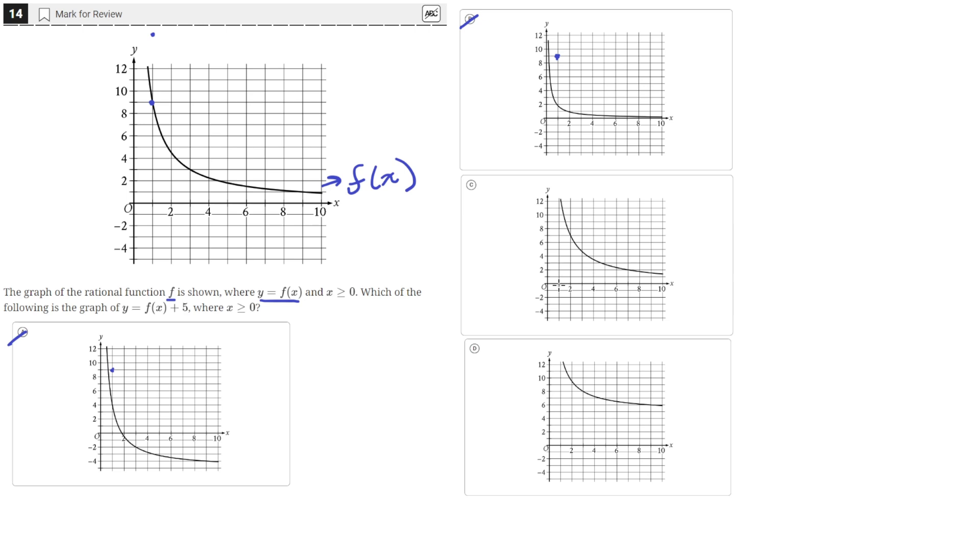For answer choice C, we see the point (1, 9) is here. The graph is above, but let's check other points. On the existing graph, we had the point (9, 1) here. On this graph, (9, 1) is here, but it hasn't been shifted up by 5 units. It's only seemed to have been shifted like half a point up.